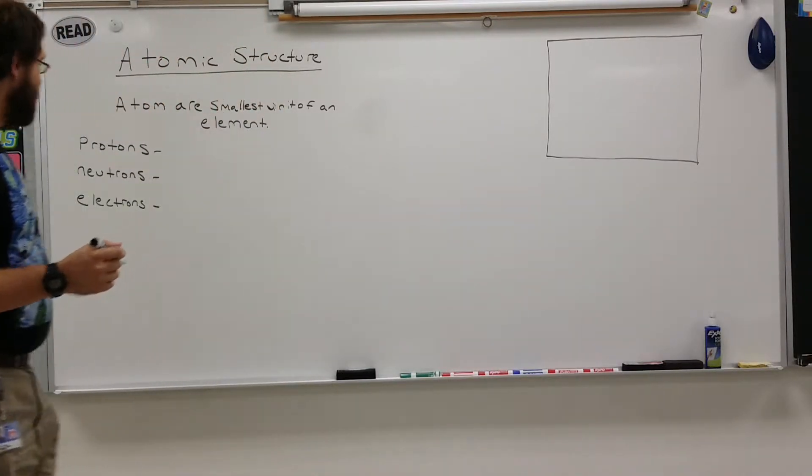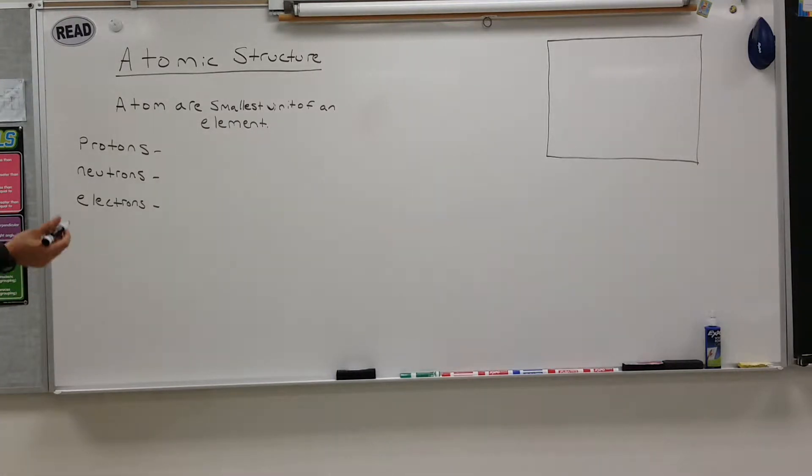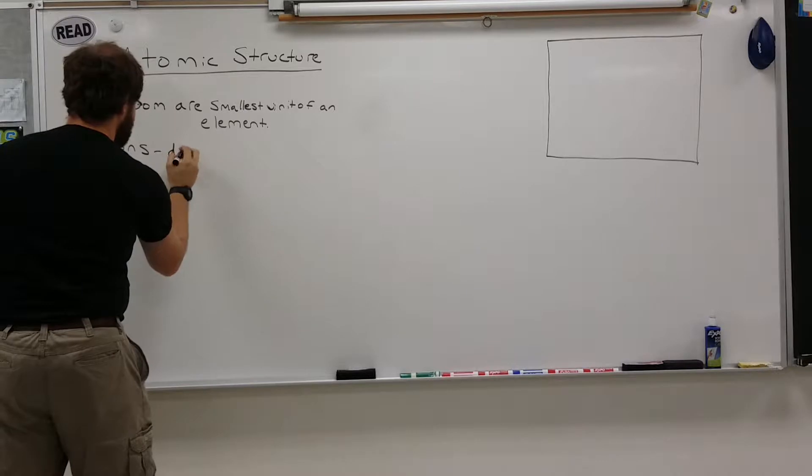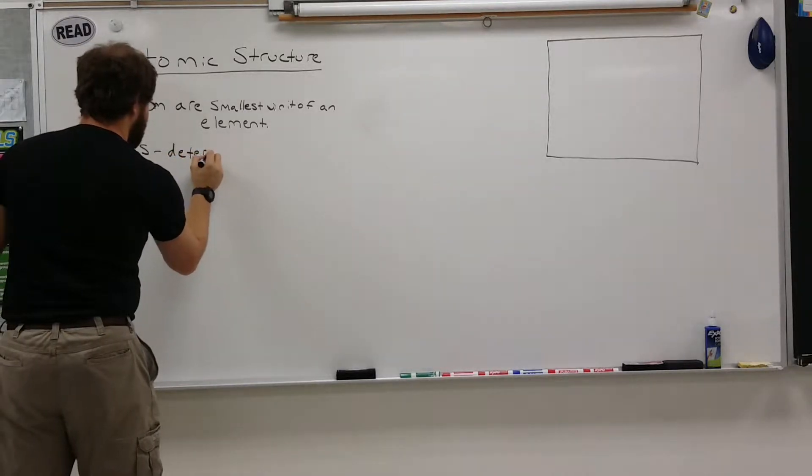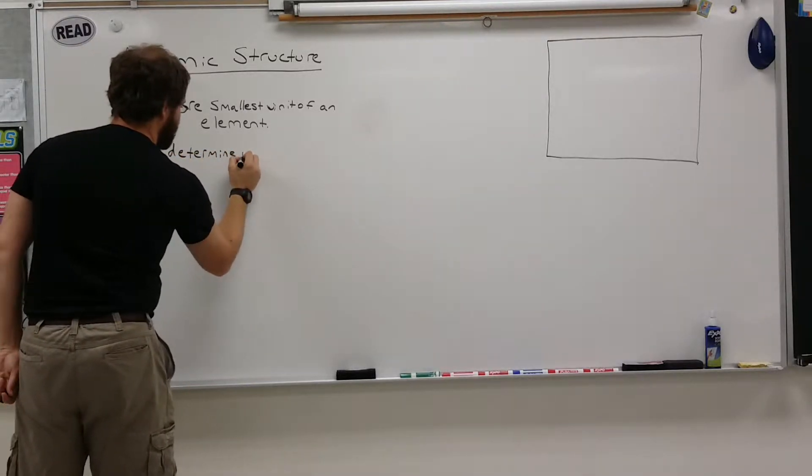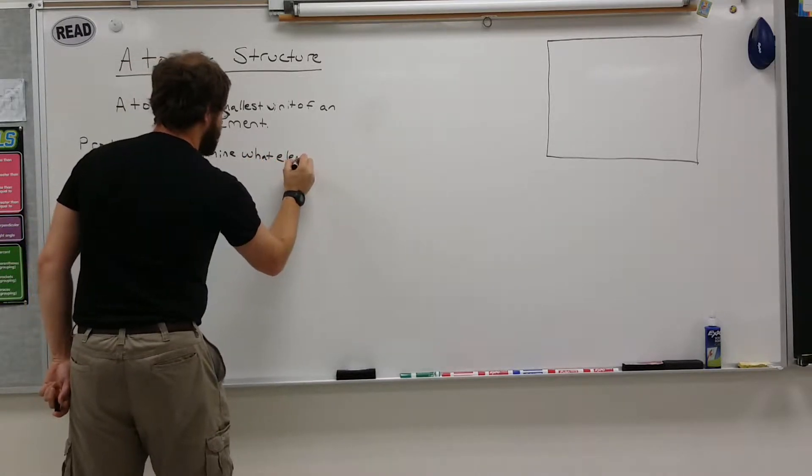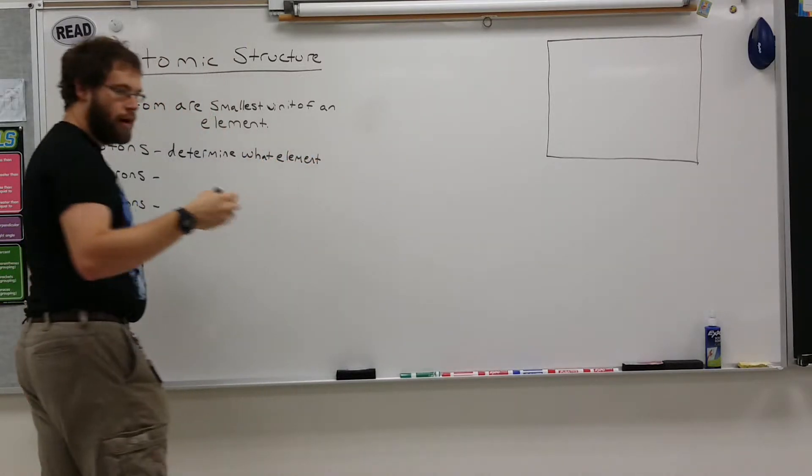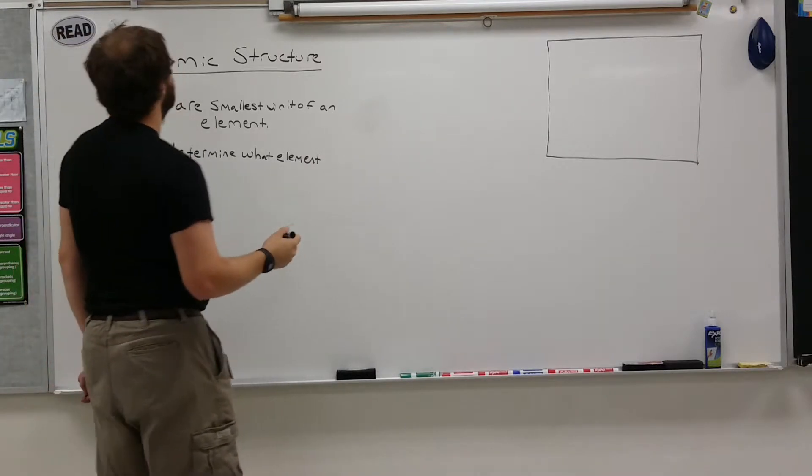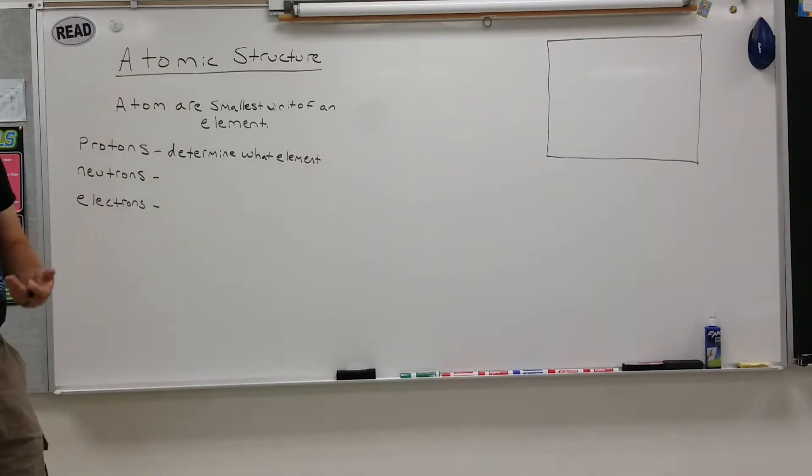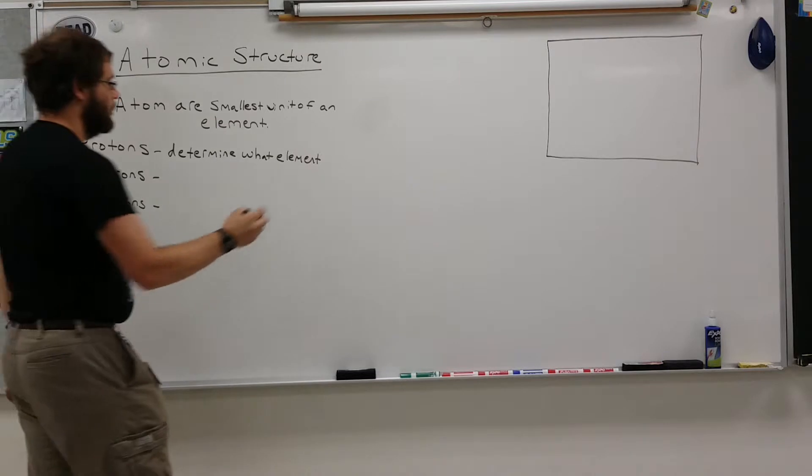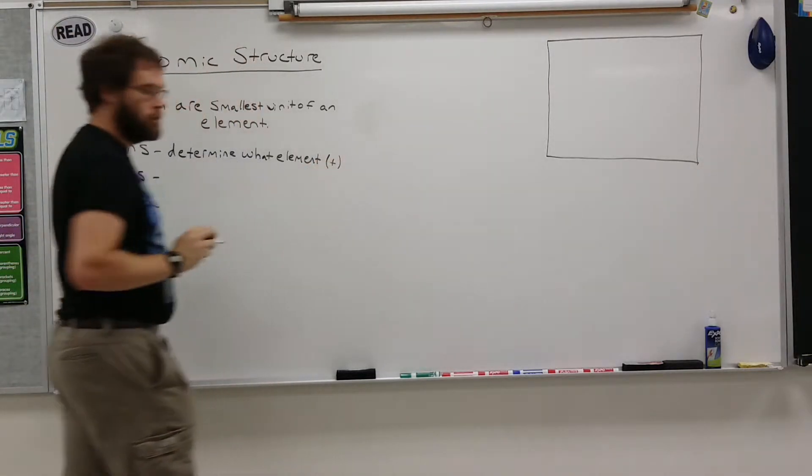And we now know that atoms are made up of several different things. The three we focus on are protons, and protons determine what element you have. So the number of protons determines what element you have. For instance, if you had six protons, you have carbon. And they are positively charged.